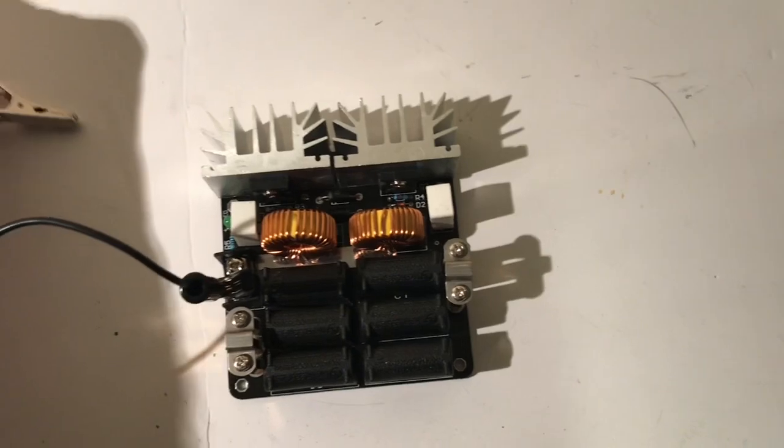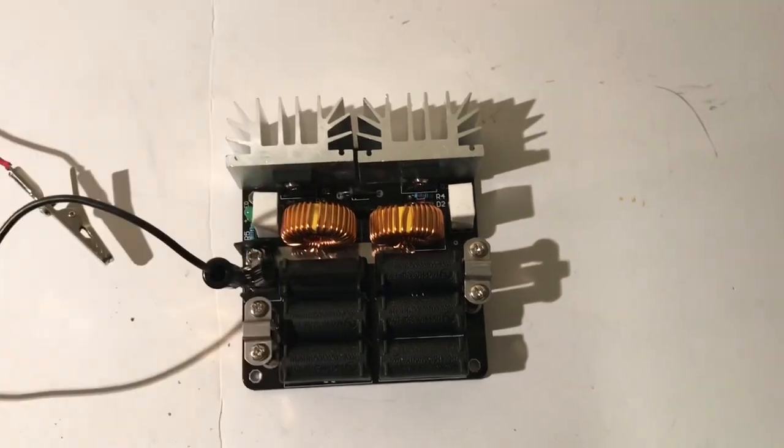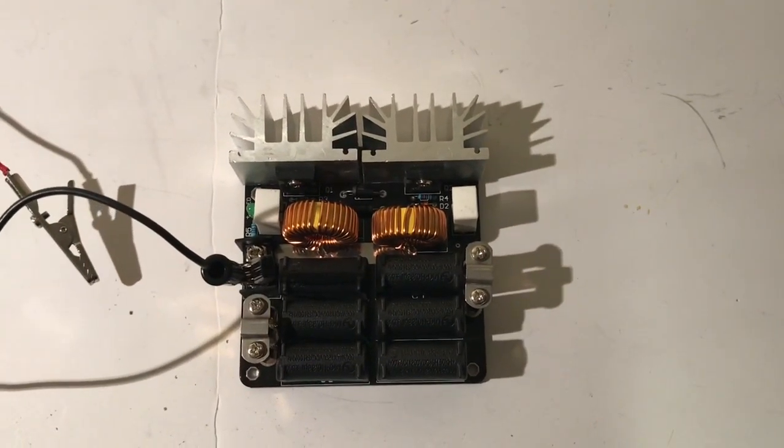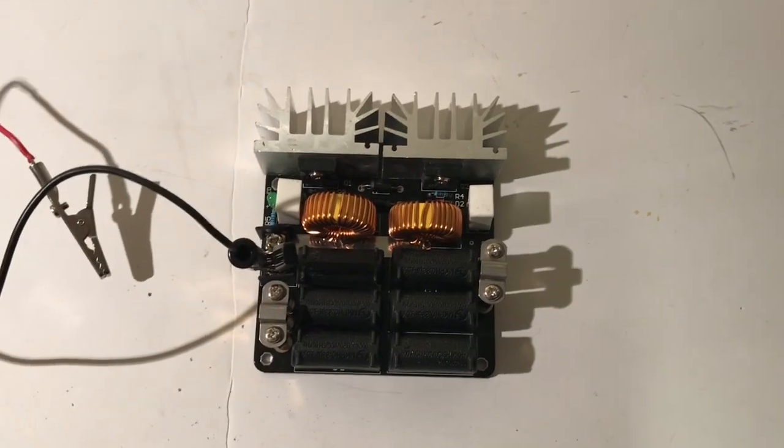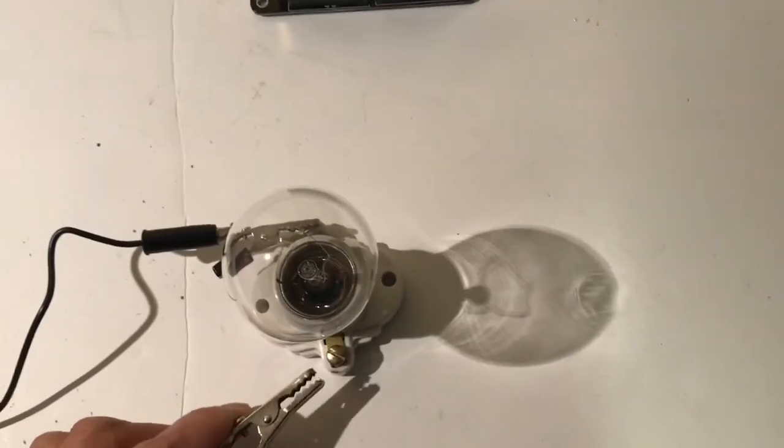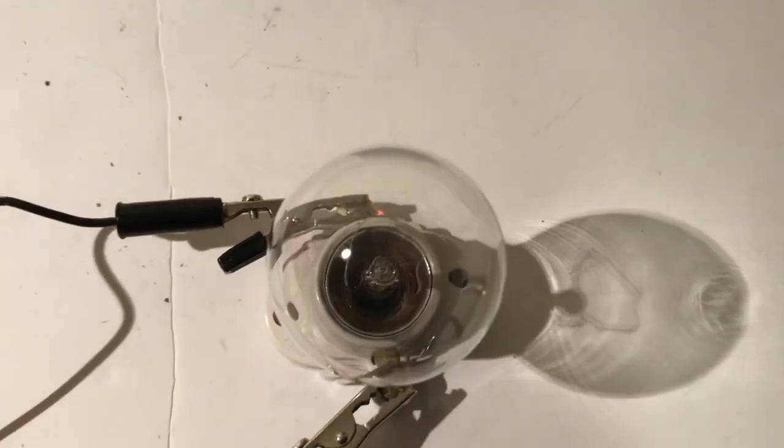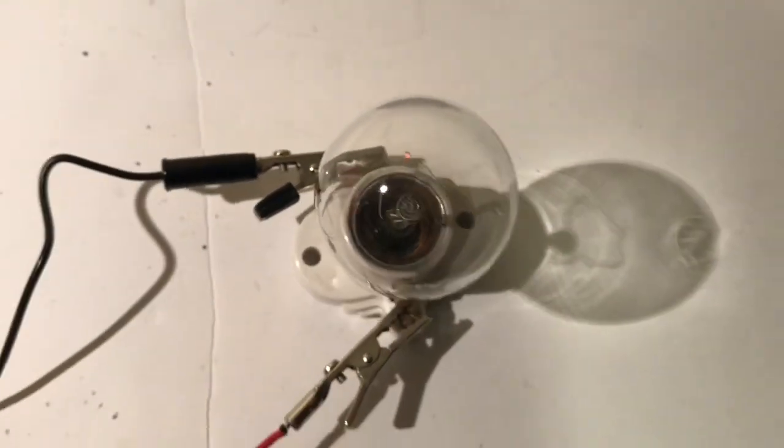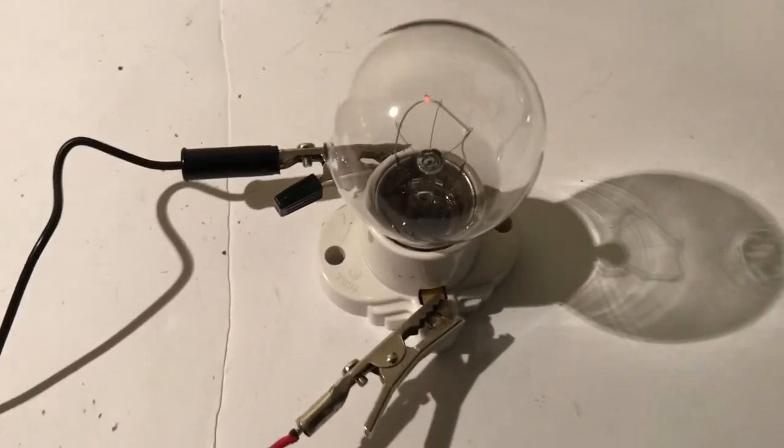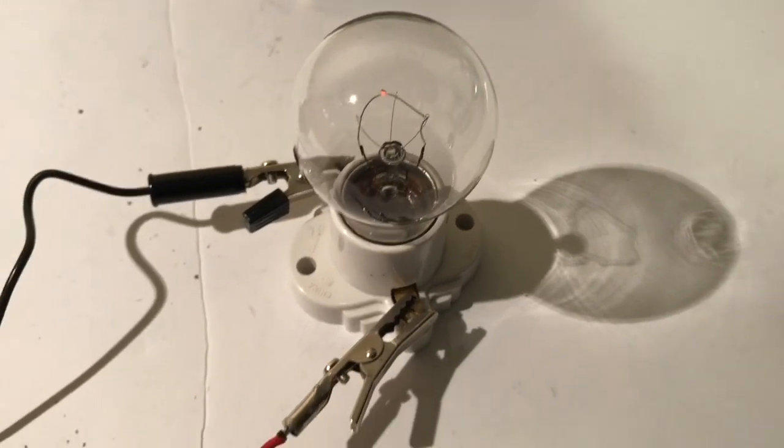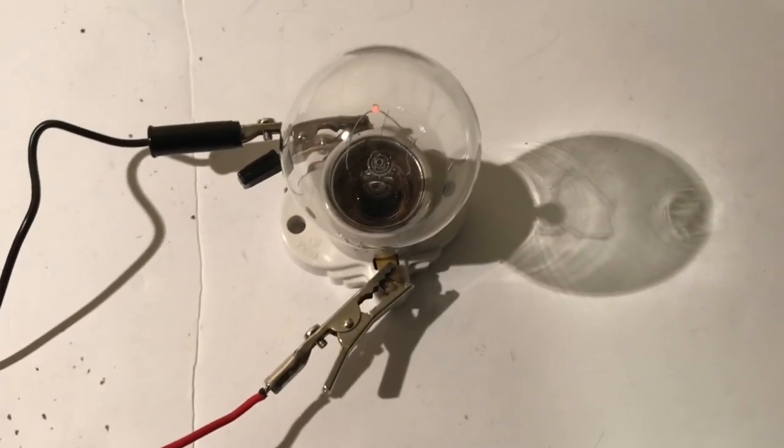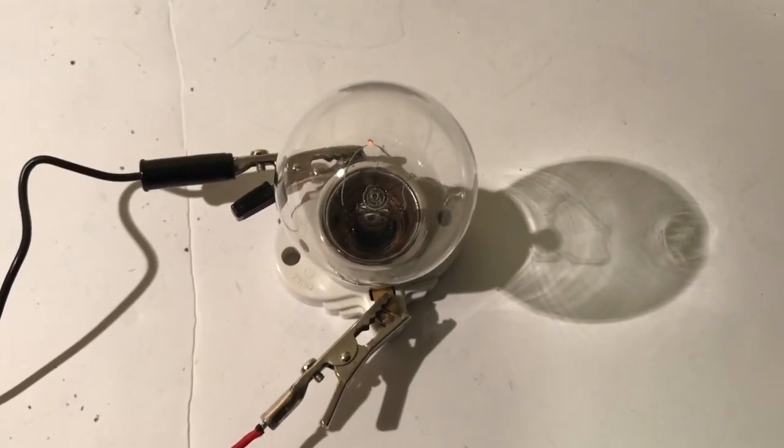Let's see what happens if we connect the output of this 12 volt power pack just to a regular light bulb. So there really isn't enough voltage to run this 120 volt, 60 watt light bulb.